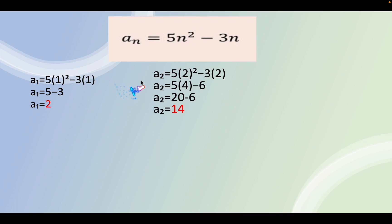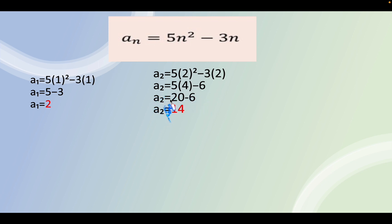For the second term, a sub 2 equals 5 times 2 squared minus 3 times 2. We substitute n equals 2. So 5 times 4 — since 2 squared is 4 — minus 6, since 3 times 2 is 6. That gives us a sub 2 equals 20 minus 6. The answer for the second term is 14.